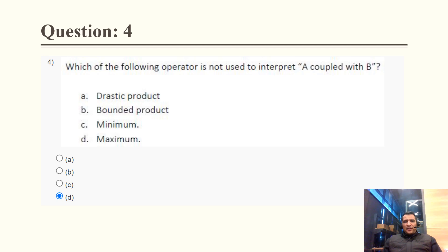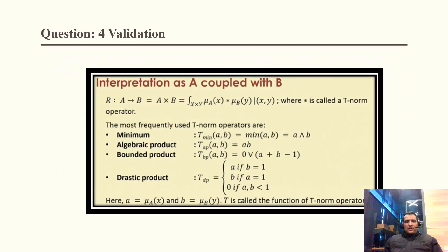Question 4: Which operator is NOT used to interpret 'A coupled with B'? Drastic product, bounded product, and minimum product are all valid interpretations of A coupled with B, but the maximum operator is not used. Therefore, option D is correct. Cross-validation confirms: A coupled with B uses minimum, algebraic product, bounded product, and drastic product — not maximum.